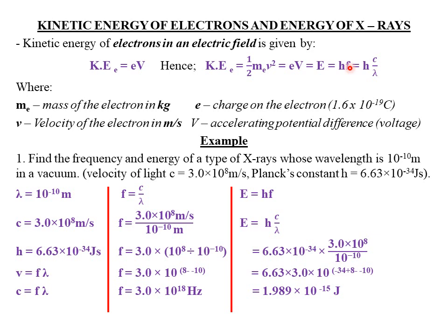From our previous classes, frequency can be given by f = c/λ, where c is the speed of light and λ is the wavelength. This means that kinetic energy can also be expressed as E = hc/λ. Let's look at an example utilizing this relationship.